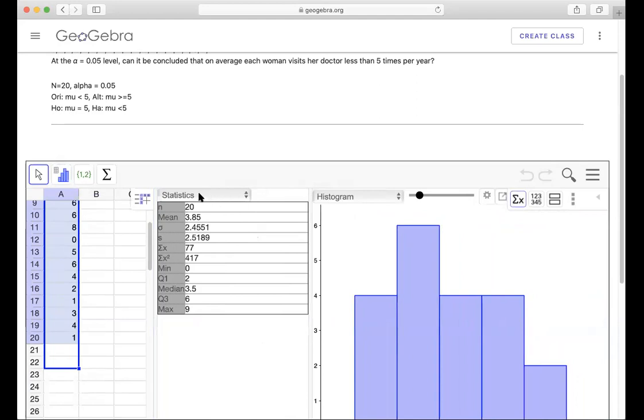When you click on statistics, you see N equals 20. Make sure they say 20 data points, then you should have n equals 20. They calculated the sample mean and this S here is the sample standard deviation. We don't worry about the sigma here.